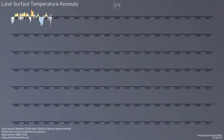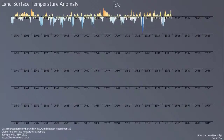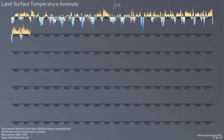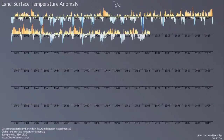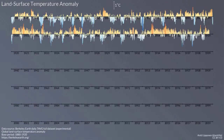In the animation, what you'll see is that once it starts, we have monthly temperature anomalies, and in the earlier part of the record starting in 1880, we have a sort of equal number of hot months and cold months.